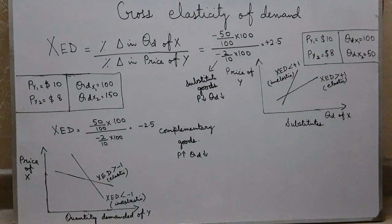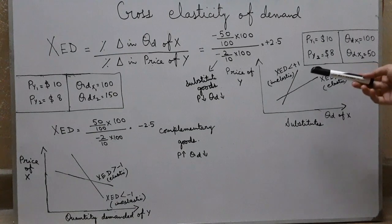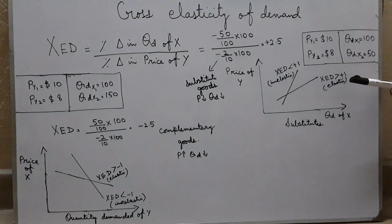Now, if the answer is positive 2.5, then it shows that these two goods are substitute goods. And in the same way, if it's inelastic cross-elasticity of demand, it means the answer will be less than positive 1. And if it's greater than positive 1, it means it has elastic cross-elasticity of demand.